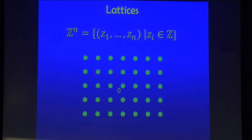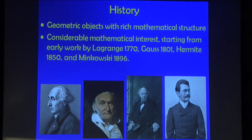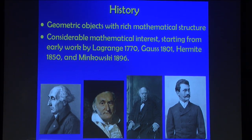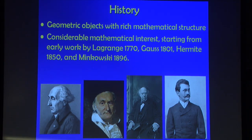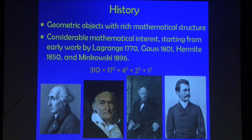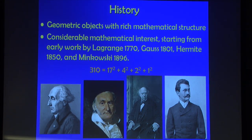Those lattices have been around for a long time — geometric objects with rich mathematical structure. Maybe the earliest interest is work of Lagrange, Gauss, Hermite, and Minkowski, who will play an especially important role in this talk. In the 19th century they cared about number theoretic questions. For instance, Lagrange's four square theorem says you can write any positive integer as a sum of four squares, which you can prove easily using lattices.